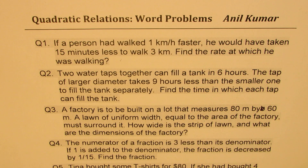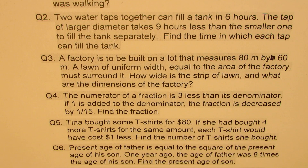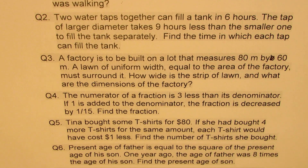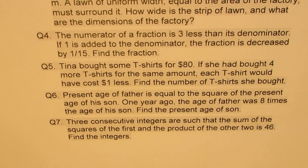A lawn of uniform width equal to the area of the factory must surround it. How wide is the strip of the lawn and what are the dimensions of the factory? Question number four: The numerator of a fraction is 3 less than its denominator. If 1 is added to the denominator, the fraction is decreased by 1 over 15. Find the fraction. Question number five: